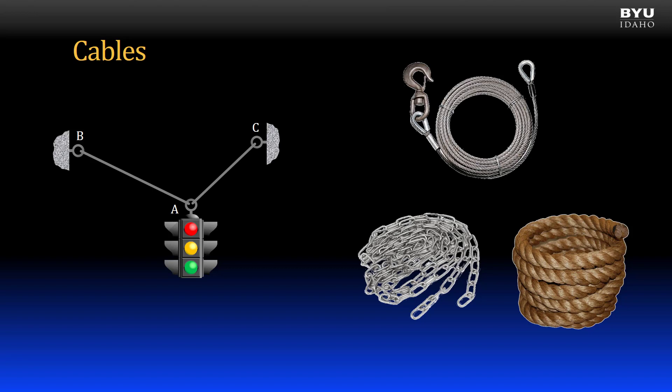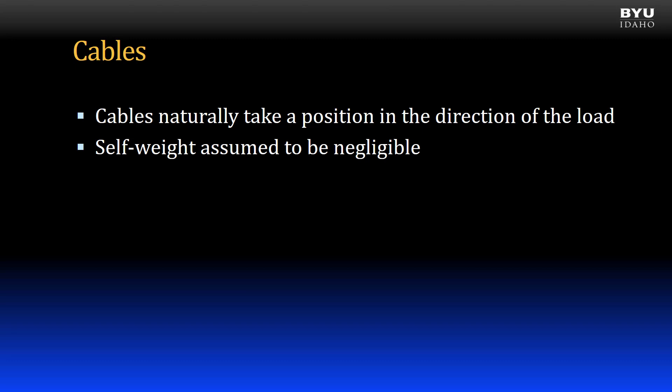Let's move on to cables. The traffic light in this system is being supported by cables. You will be seeing a lot of systems involving cables for the next little while. Now a cable may refer to a steel multi-strand wire cable as often used in engineering applications, like the cable in a crane, but it can also be a chain or rope or some sort of cord. A few things to keep in mind about cables. First, cables naturally take a position in the direction of the applied load. What I mean by this is that when you draw a free body diagram of a system supported by cables, the force vectors point in the direction of the cable length from the point where it attaches to the particle or body. Next, the self-weight of the cable is assumed to be negligible, so we ignore it in our problems.